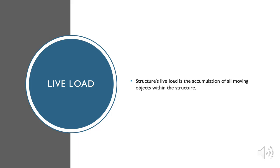A structure's live load is the accumulation of all moving objects within the structure. Live loads vary from structure to structure and depend on structure usage. For example, live loads on the roof and floor are produced during maintenance by workers and their equipment, while live loads on a bridge are produced by cars driving over the bridge deck.